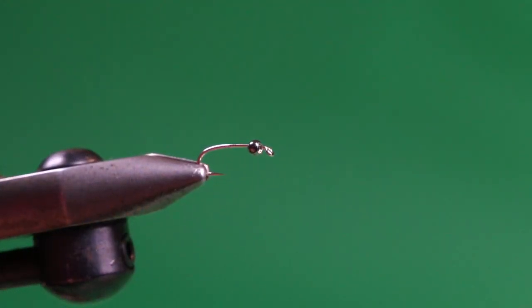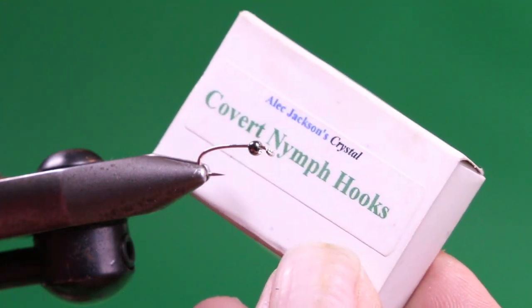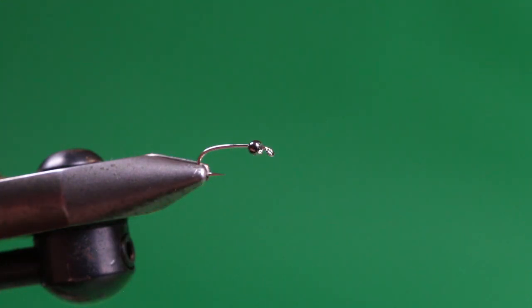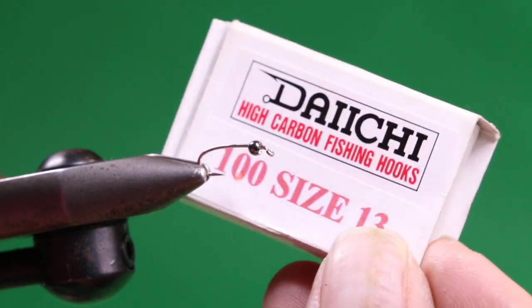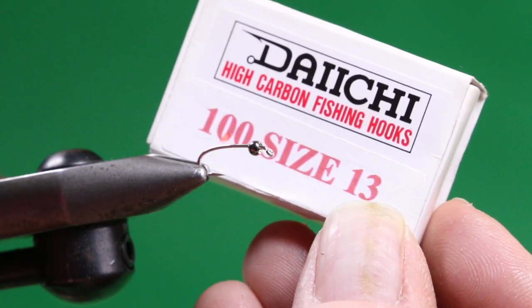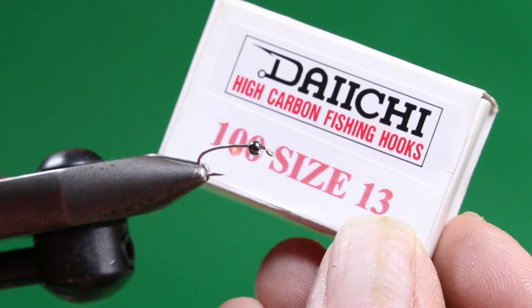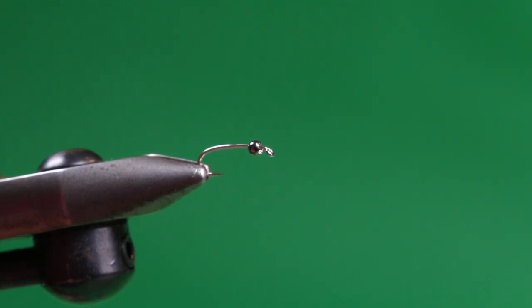Let's tie the Western Wufta. Into the jaws of the vise, I've placed a Daiichi. This is the Alec Jackson Crystal Covert Nymph Hook. It's basically a Daiichi 1760 with a chrome coating on it. It's a size 13. These have got some weird sizings on them. So this is approximately a 14. A 15 would be a 16 and an 11 would be a 12. And those would be the sizes I tie this fly in: 12, 14, 16.